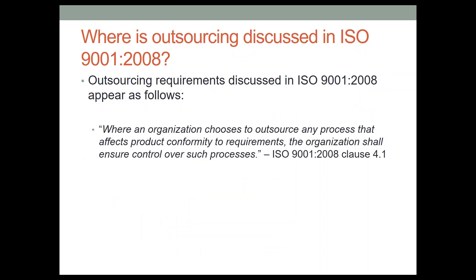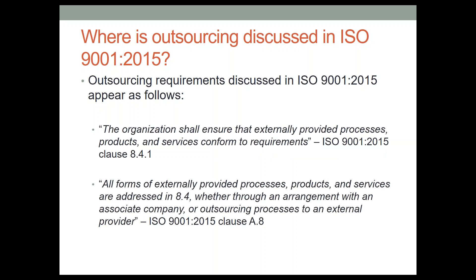Where is outsourcing discussed in the standard? In the 2008 version, it is primarily discussed in Section 4.1: where the organization chooses to outsource a process that affects product conformity, the organization shall ensure control over such processes. It was covered in rather short order in the 2008 version. In 2015, it was covered more thoroughly and treated as part of the bigger picture of external providers, with the primary clause being Section 8.4. From 8.4.1: the organization shall ensure that externally provided processes, products, and services conform to requirements.